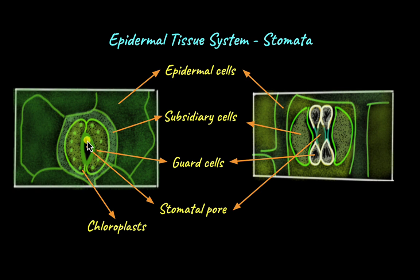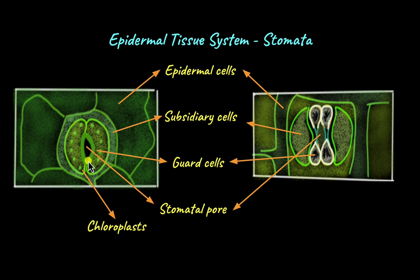The actual opening through which gas exchange takes place is called the stomatal pore or the stoma. Bordering the stomatal pore on both sides are the two guard cells. The function of the guard cells is to regulate the opening and closing of the stomatal pore. Gas exchange is not the only process that occurs through the stomatal pore — water loss by the process of transpiration also occurs through it. To prevent excess water loss, guard cells regulate the opening and closing of the stomata.